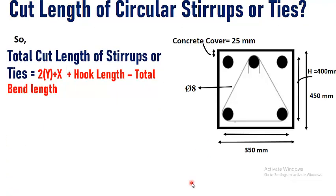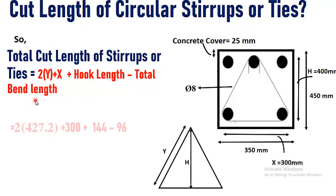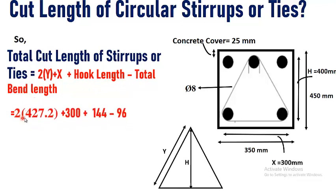So now by putting the values in a formula, that is total length of a stirrup or tie is equal to 2 times of y plus x plus hook length minus total bend length.